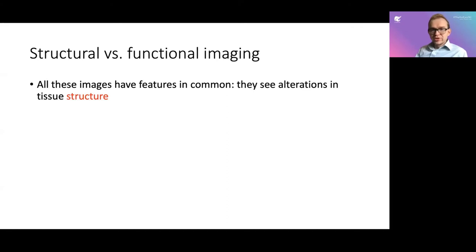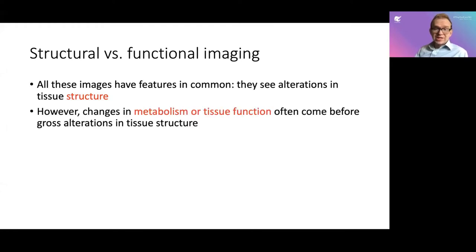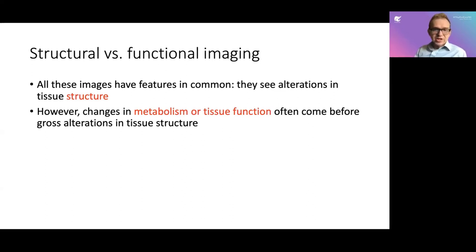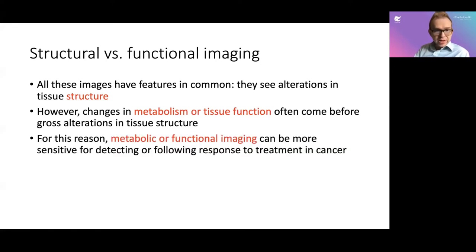Let's talk about structural versus functional imaging. The imaging modalities discussed so far all share a common feature: they see alterations in tissue structure, looking at soft tissue densities. However, in some cases, changes in metabolism or tissue function can come before gross alterations in tissue structure. Fundamentally, what we're looking for in CT, ultrasound, and MRI is: is there a mass? Is it getting bigger or smaller? But changes in metabolism can characterize masses or tell you more about treatment response before that structural alteration appears. Metabolic and functional imaging can therefore be more sensitive for detecting cancer or following response to treatment.